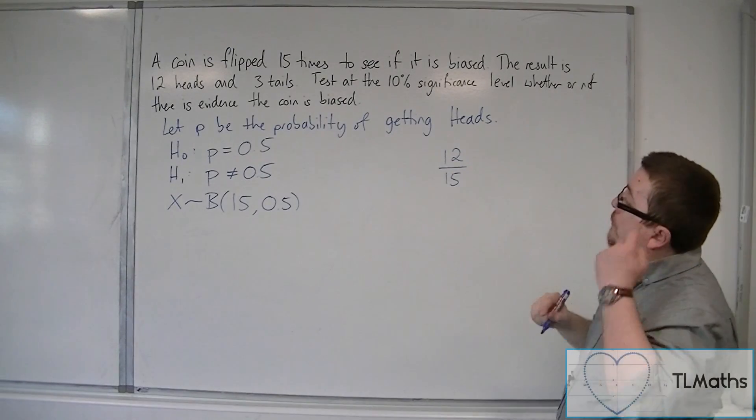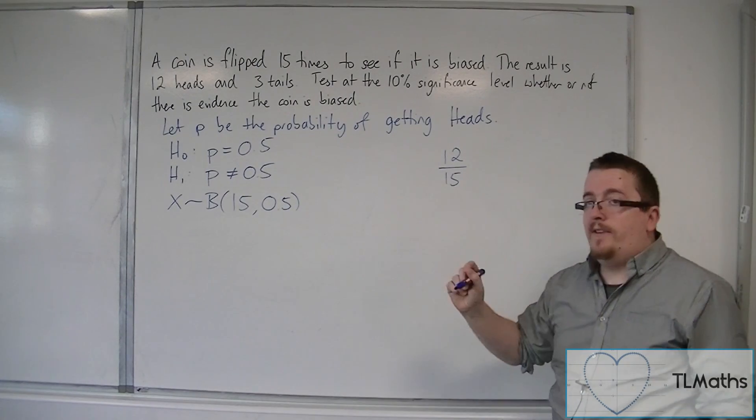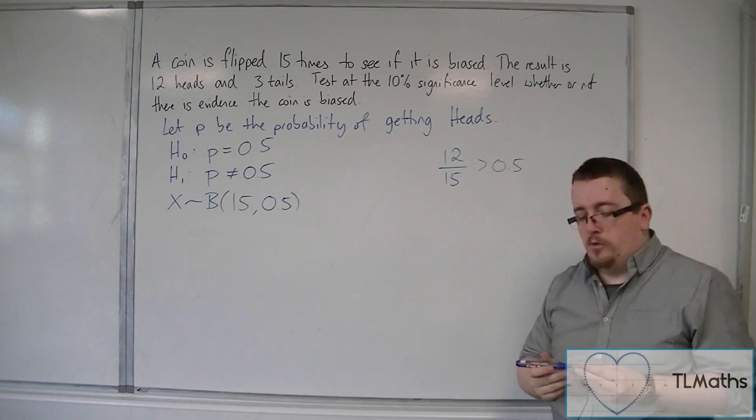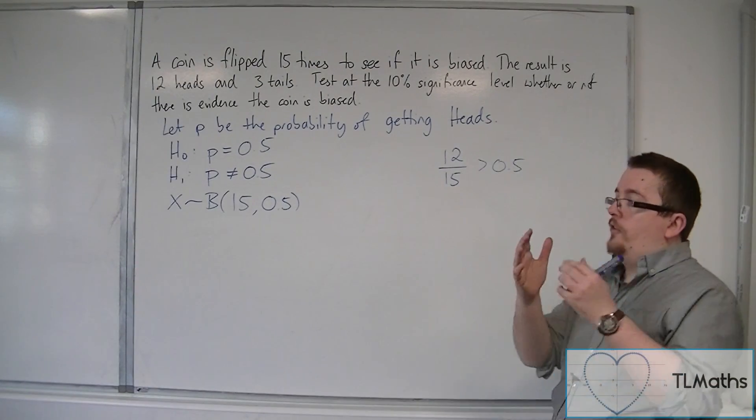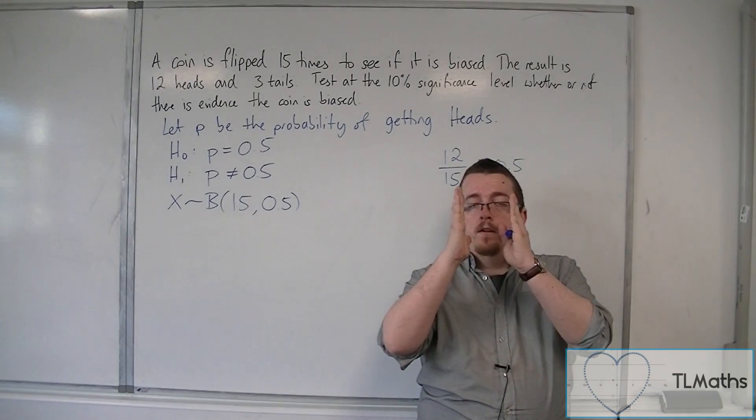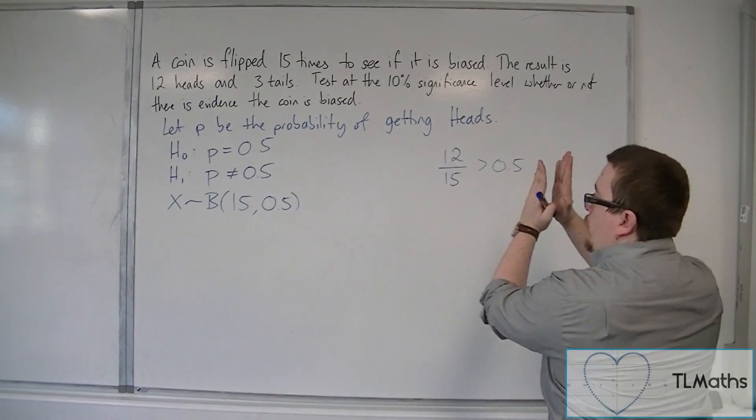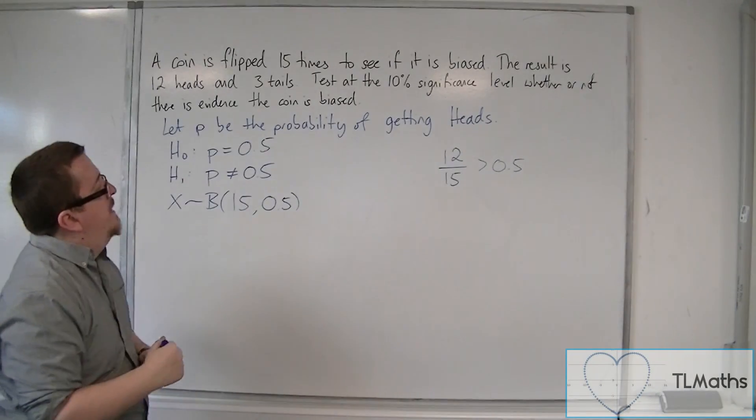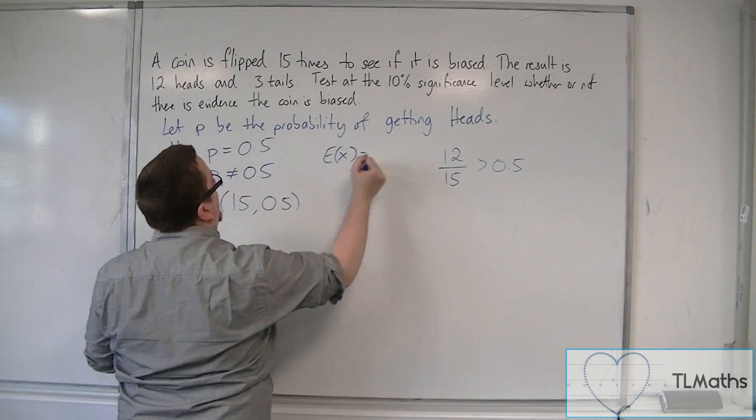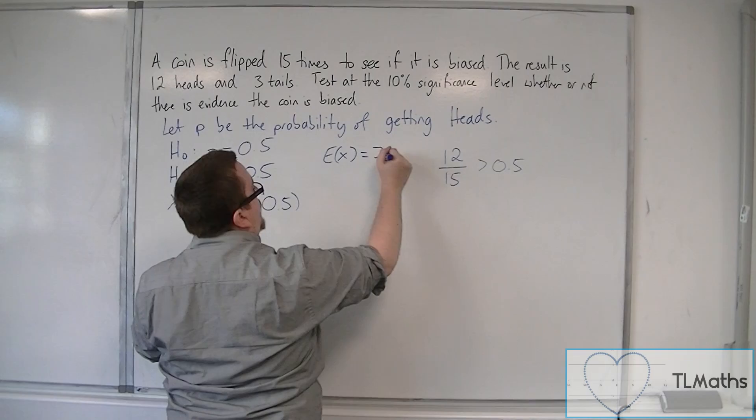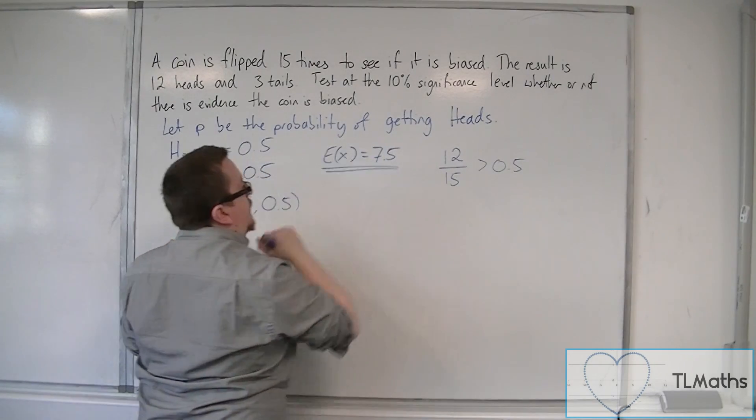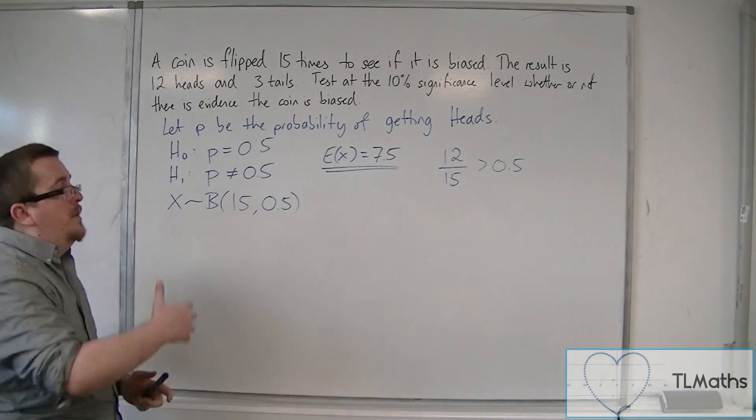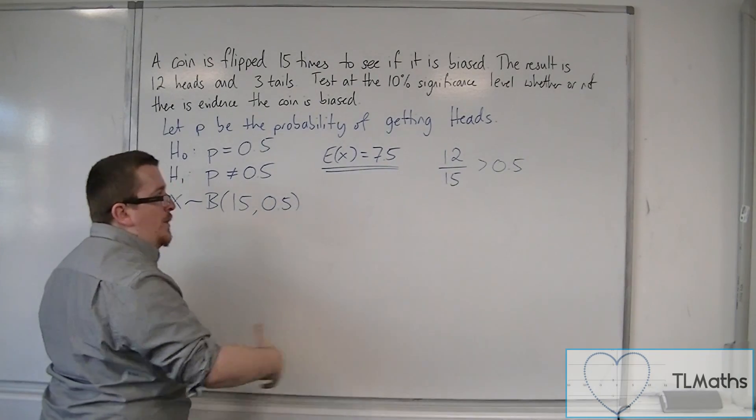Now, 12 over 15 is greater than 0.5. So what we're looking at is to the right of the expected value. Now, the expected value E of X is 15 times 0.5, so 7.5. So the expected value of 7.5, we actually got 12 heads, and so we want to look at the probability of X being greater than or equal to 12.